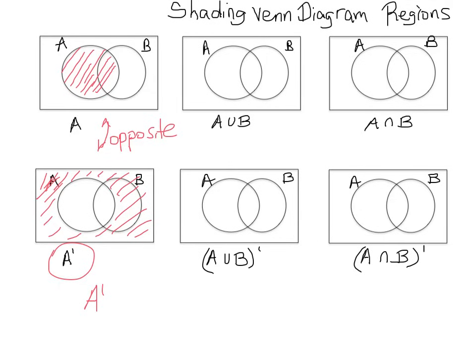Next is A union B. That tells us to shade everything in both sets — everything in A as well as everything in B. Whenever you see union, all of A gets shaded as well as all of B.